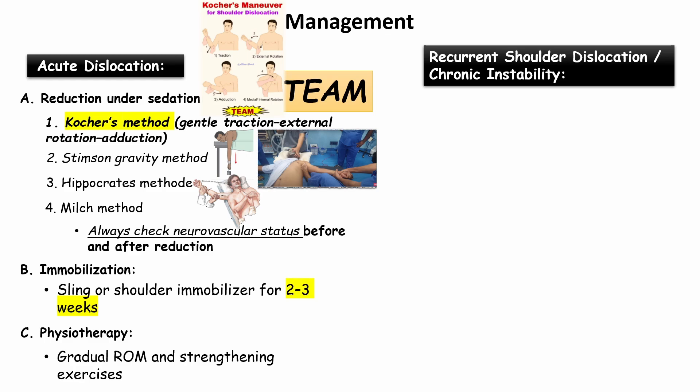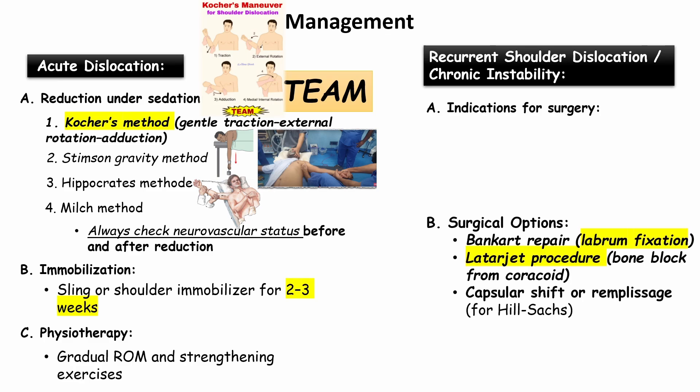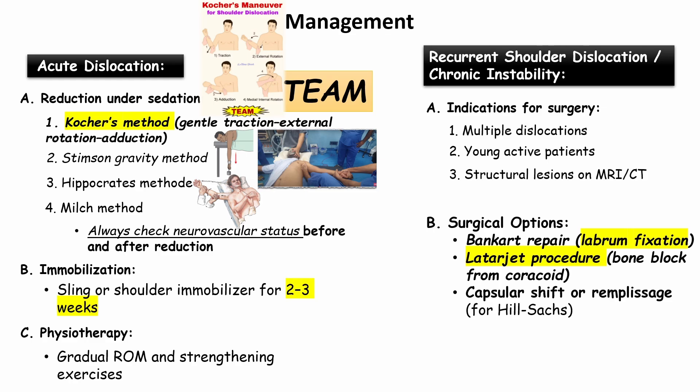Physiotherapy involves gradual range of motion and strengthening exercises. For recurrent shoulder dislocation or chronic instability, indications for surgery include multiple dislocations, young active patients, and structural lesions on MRI or CT scan. Surgical options include the Latarjet procedure for Bankart lesion (labral tear) and capsular shift or remplissage procedure for Hill-Sachs lesion.